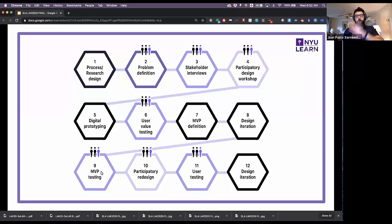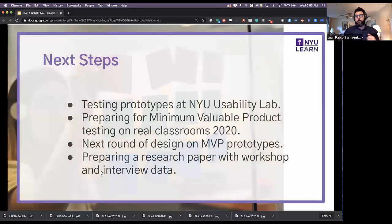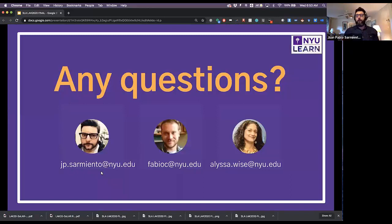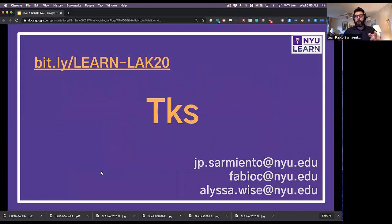As for next steps: what we presented here covers the first four stages of our overall process. We are currently going through the second row of our process outline, and the third row is the future. We have been testing prototypes at the NYU Usability Lab, preparing for a minimum viable product to test with real students this year, and coding the workshop data into a full research paper. Thank you very much — feel free to ask questions, and we've left a link to an informal chat room for further discussion after this lecture.